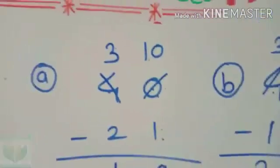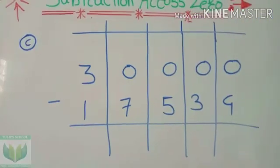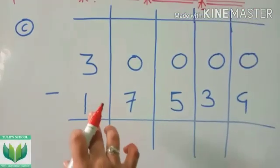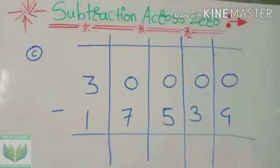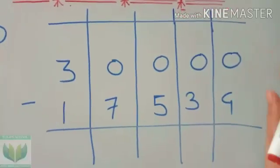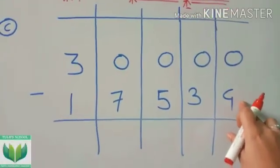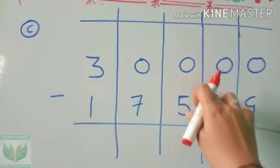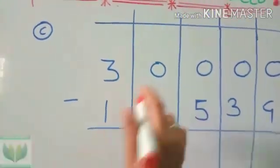Now let us see a 5-digit number. I wrote the example 30,000 minus 17,534. Now we have to do subtraction. 0 minus 4 is not going because it is smaller. Again, 0 minus 3 is no, 0 minus 5 is no, 0 minus 7 is no, and 3 minus 1.